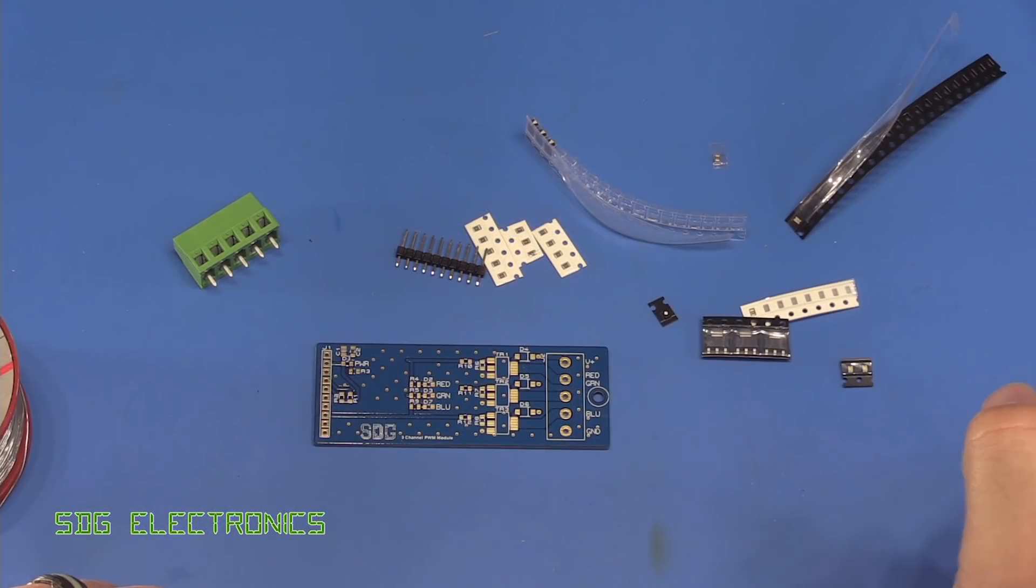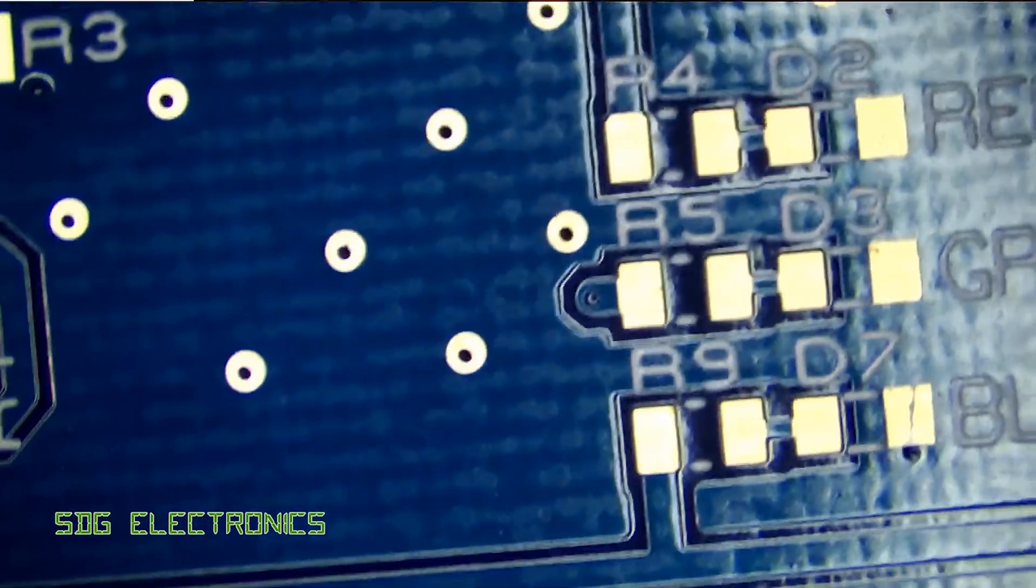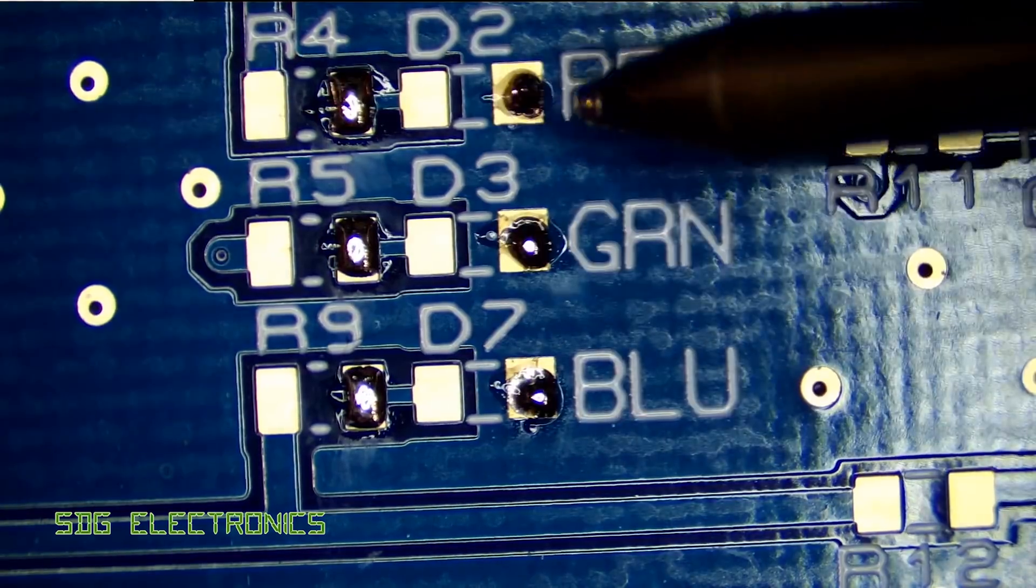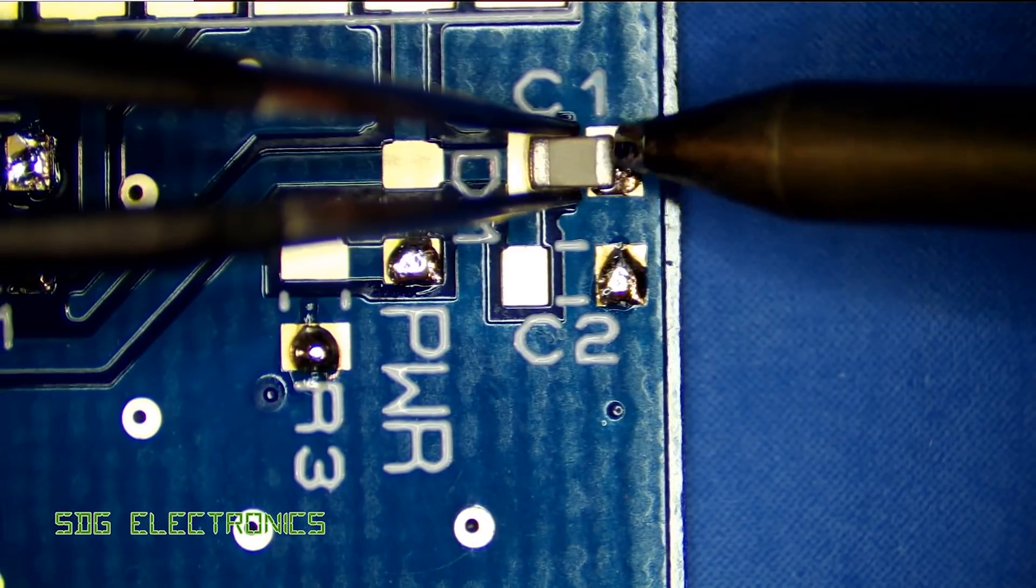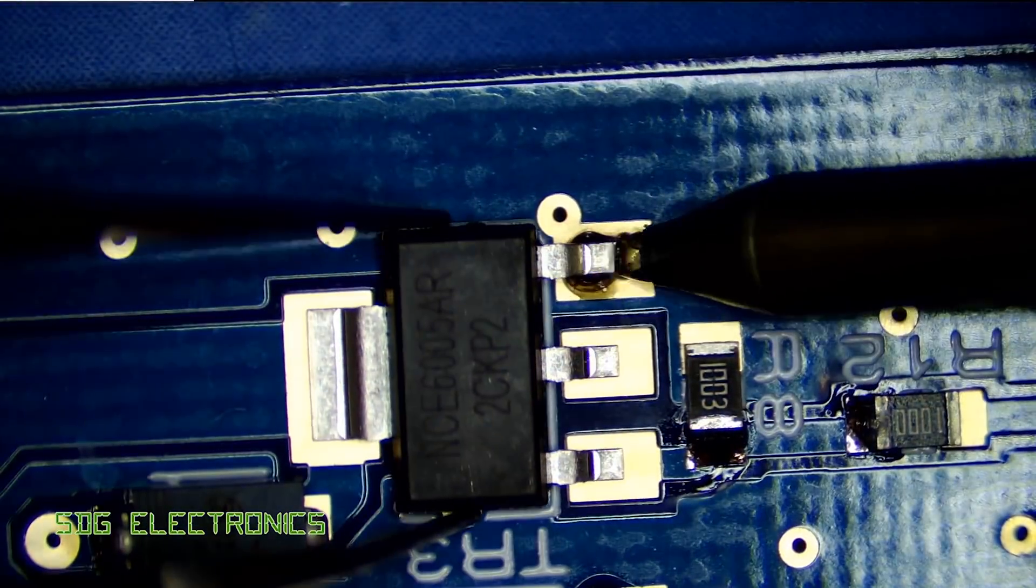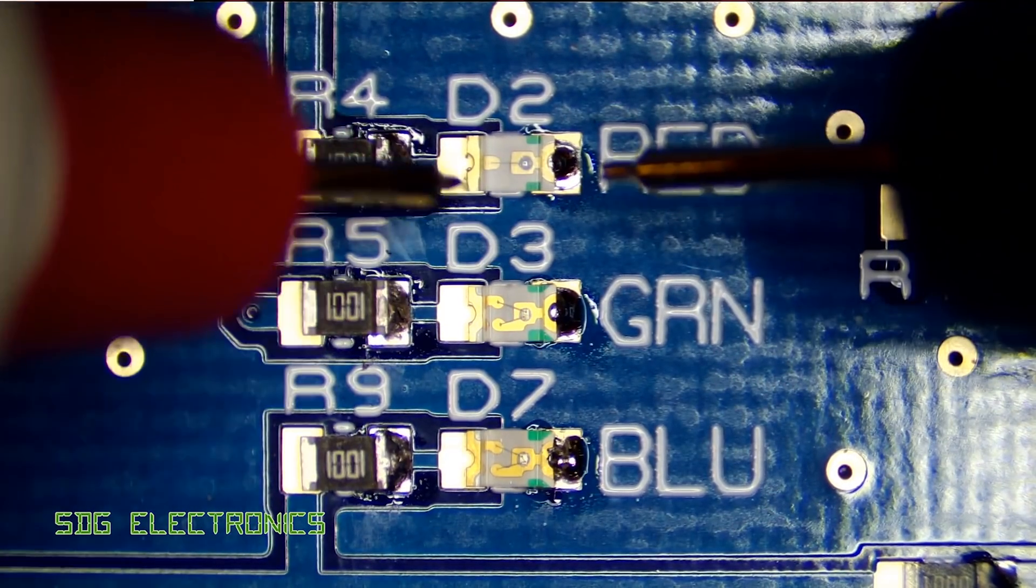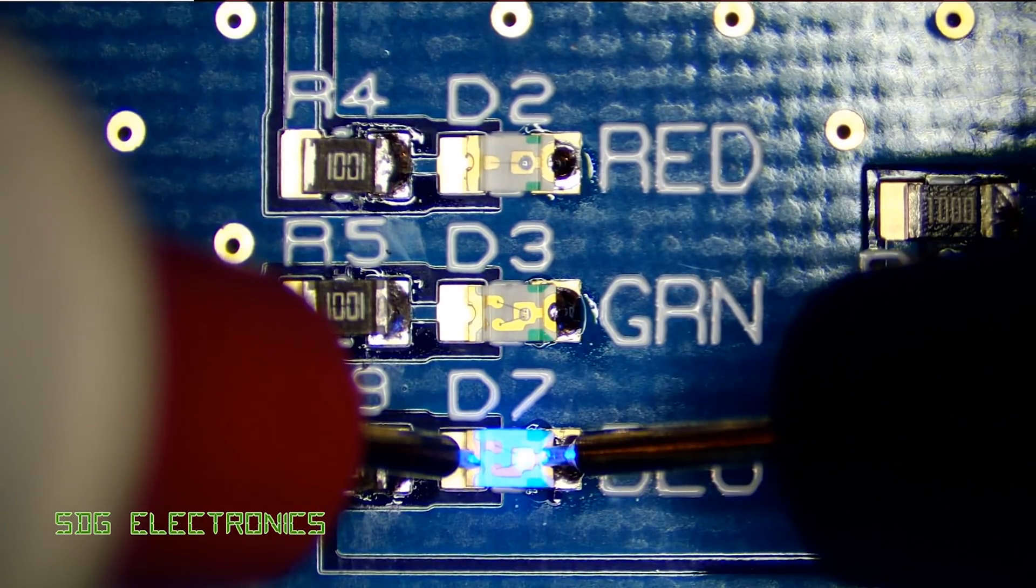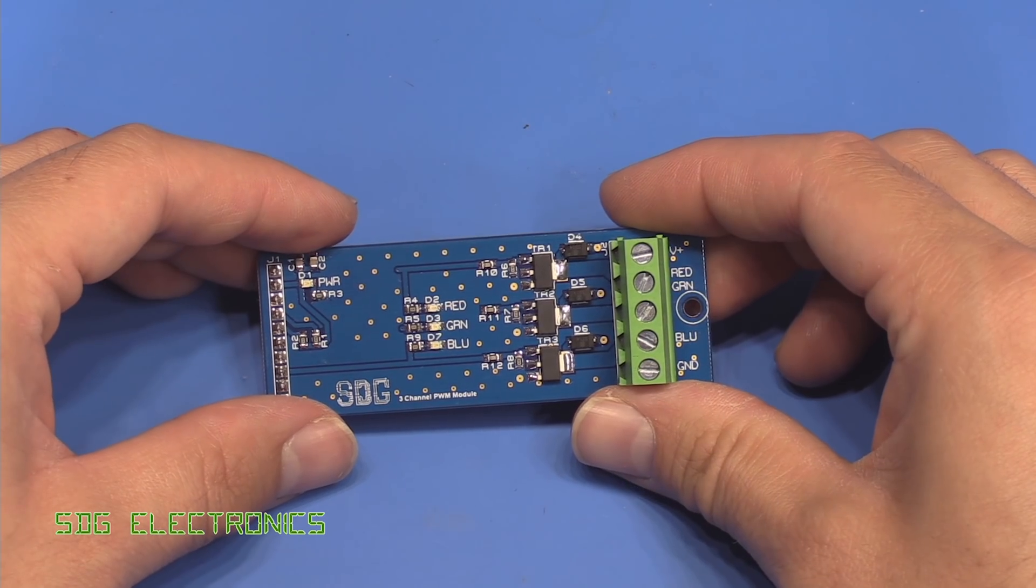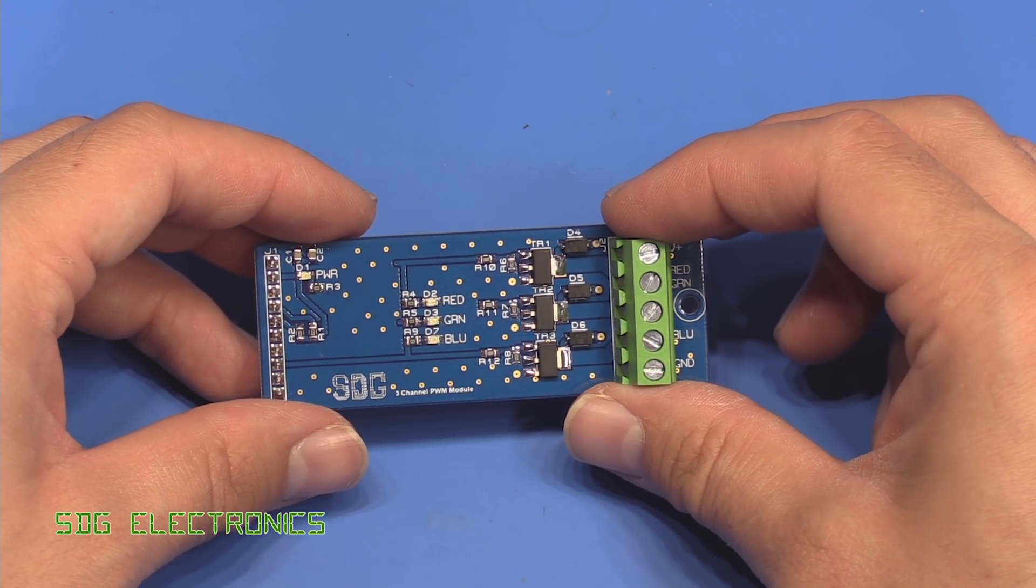I've got all the components ready to start assembly. We're gonna start with the resistors first, but first I'm going to put a blob of solder on each of the pads. That's the PCB all soldered up. It was nice and quick, only about 10 minutes of soldering.